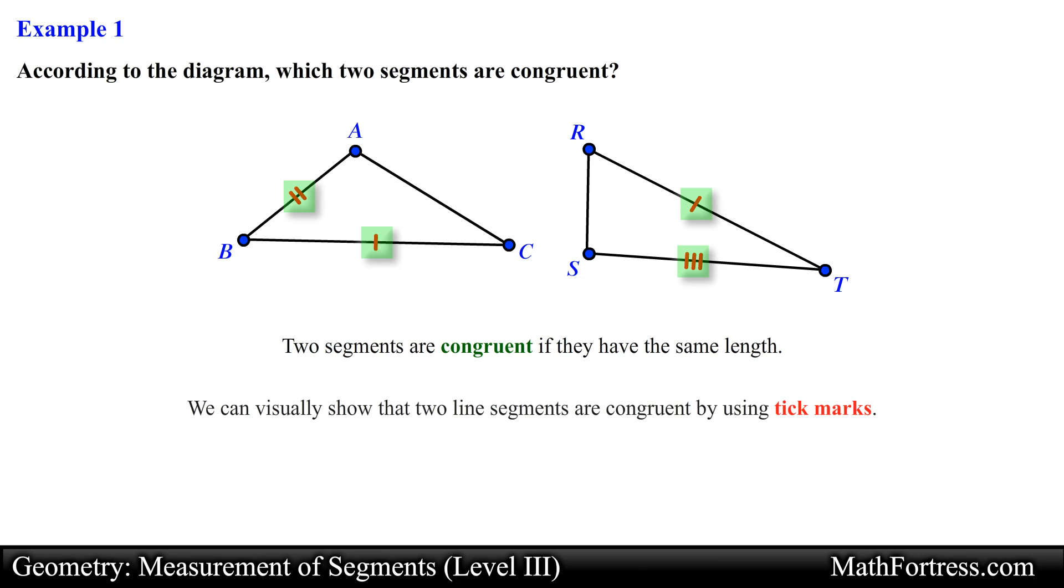Remember that we can visually show that two line segments are congruent by using tick marks. In the first triangle, segment AB has a double tick mark and segment BC has a single tick mark.